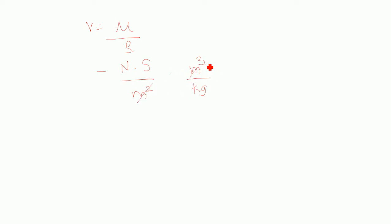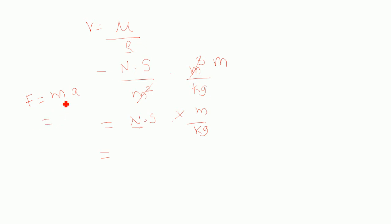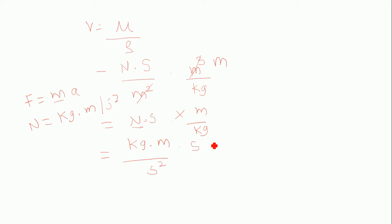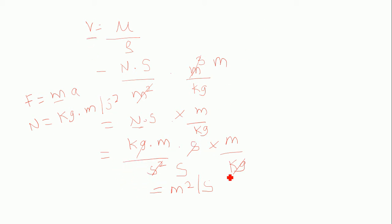So the meter square cancels, leaving only M. Writing Newton second over Kg: since Newton is the unit of force, and force is mass into acceleration, Newton can be written as Kg meter per second square. Substituting: Kg meter per second square, times second, over meter, over Kg — the Kg cancels, leaving meter square per second. So the SI unit of kinematic viscosity is meter square per second.